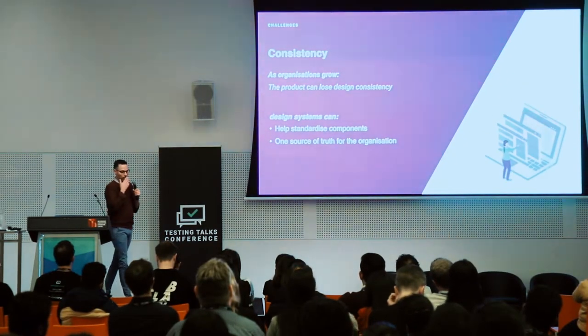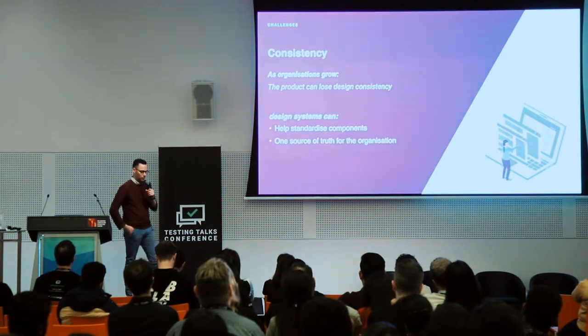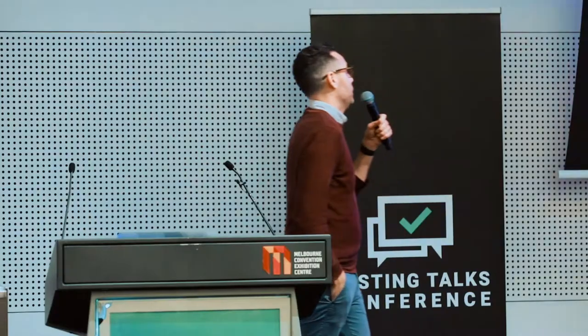Consistency — as teams and organisations grow, things get out of whack and design consistency goes out the window. Design systems can help here: they standardise the components, everybody's using them, along with the design guidelines. It's that one source of truth.